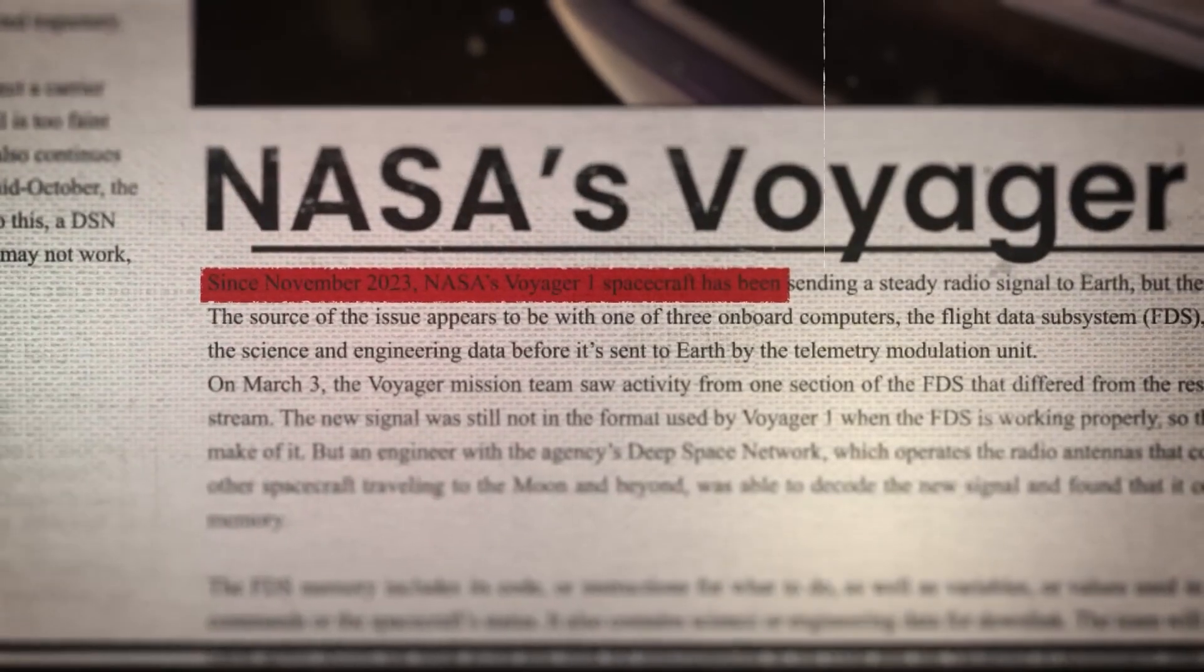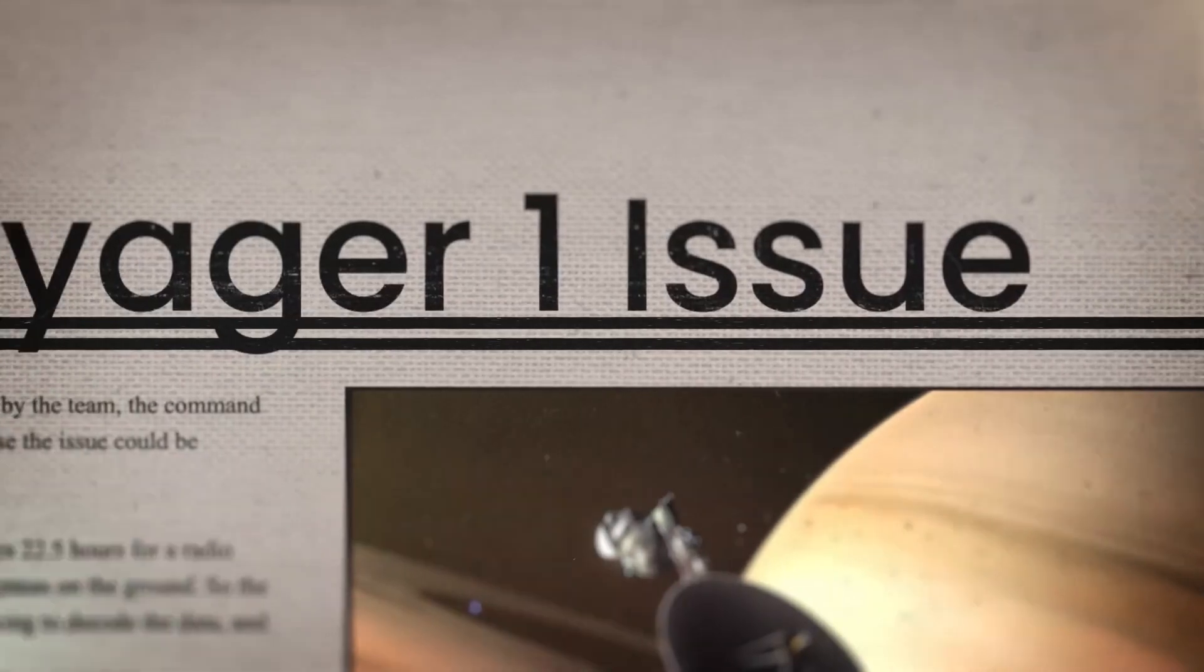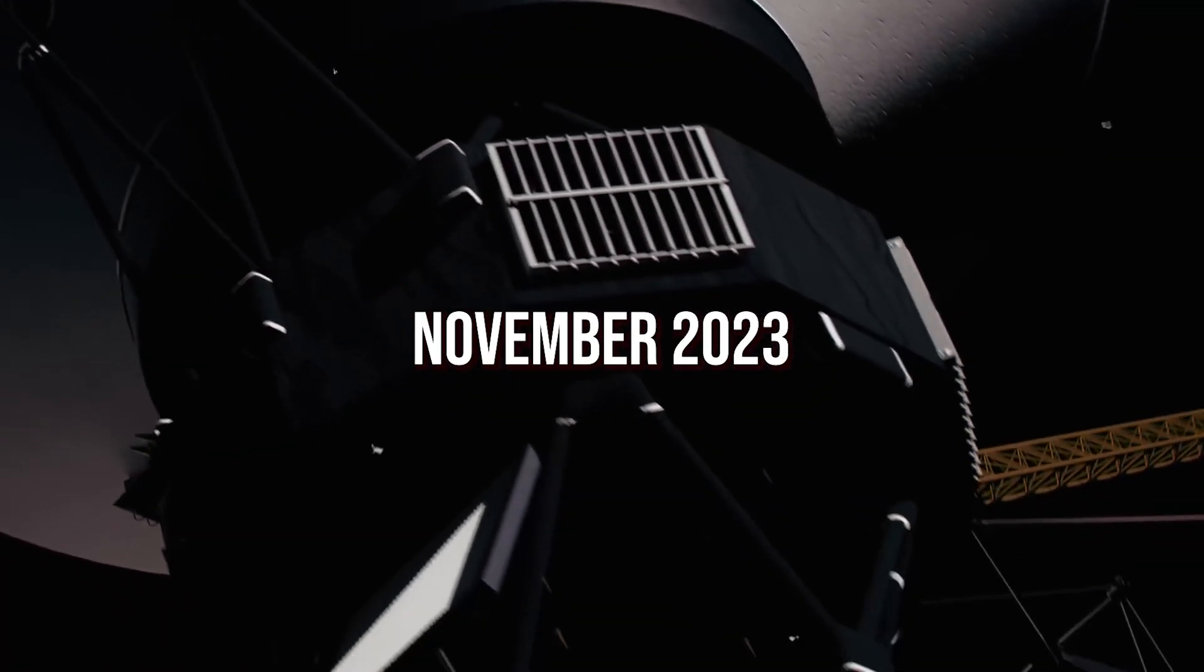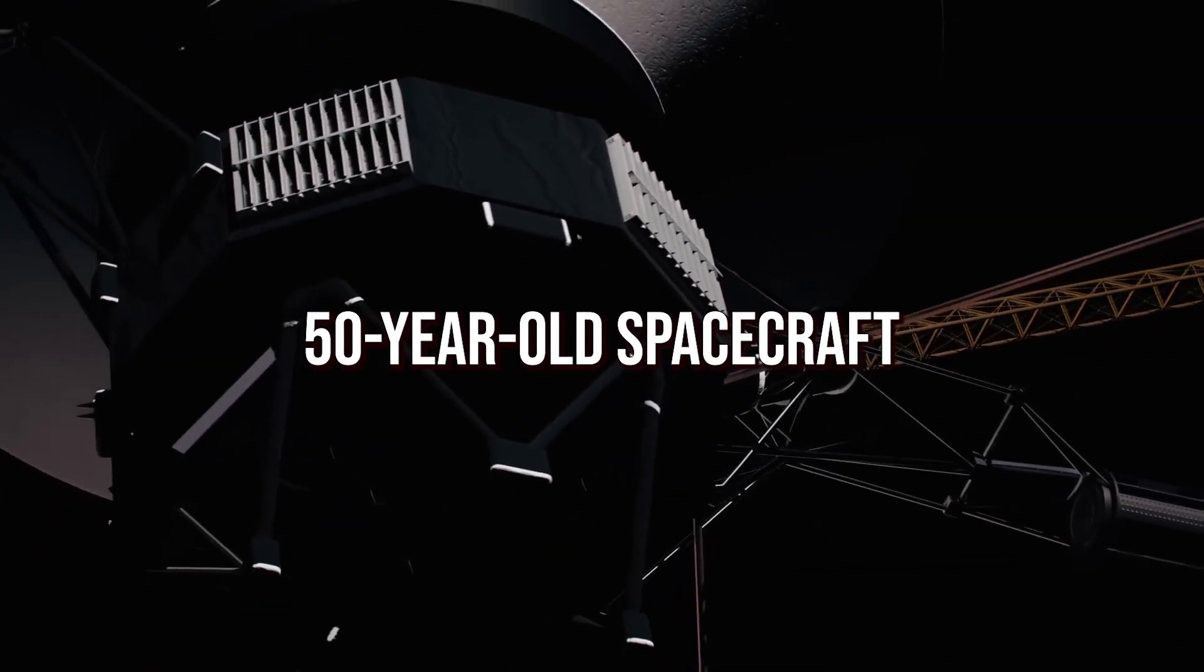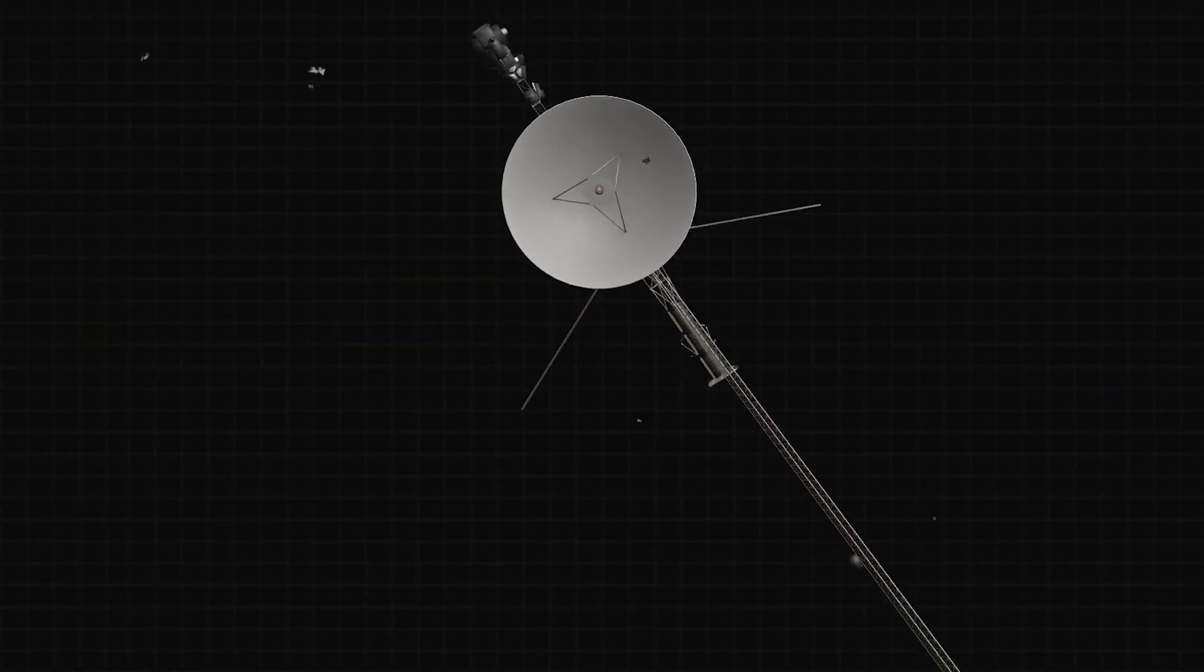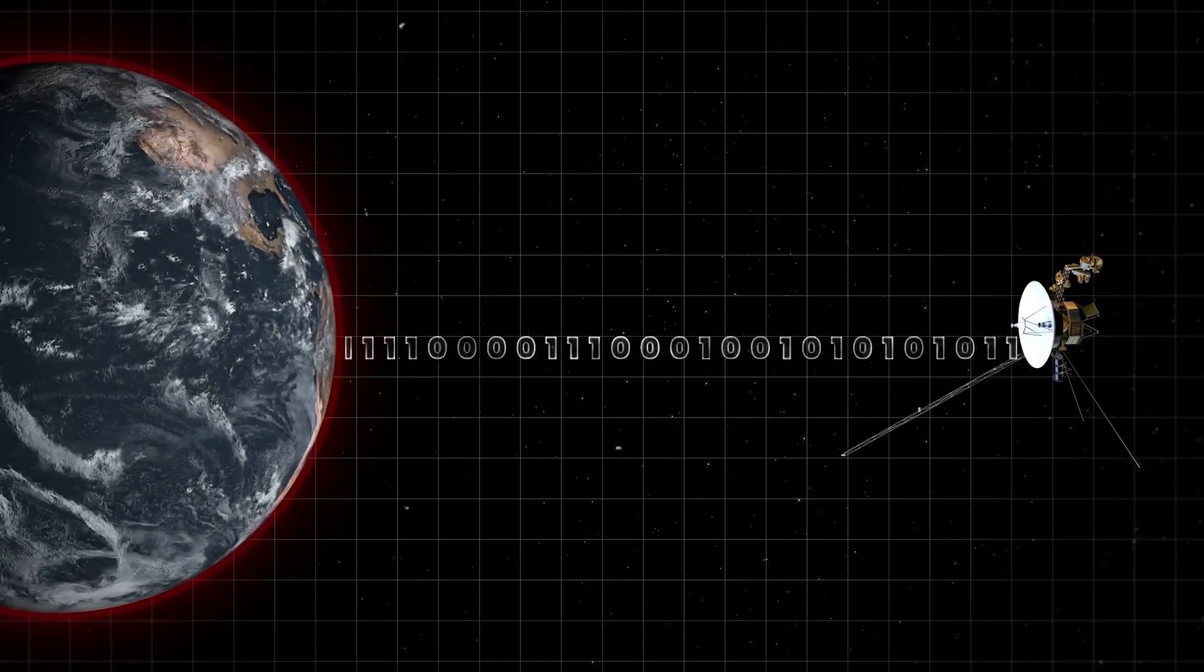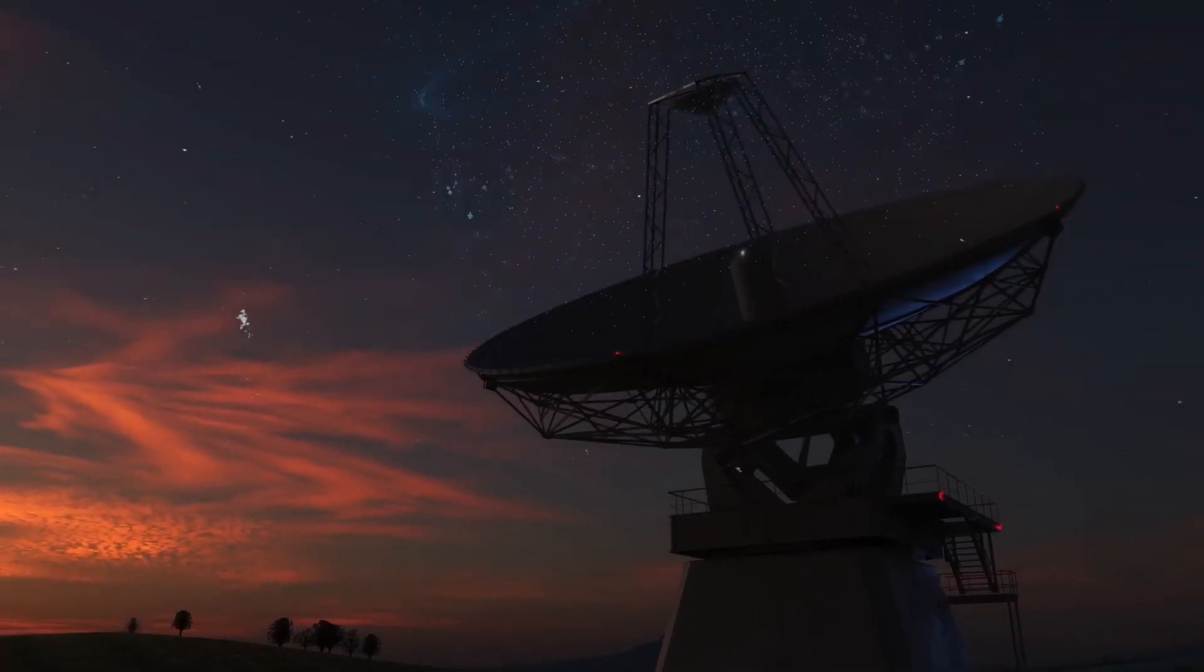After an intense five months, NASA has finally received a clear signal from its Voyager 1 spacecraft. Since November 2023, the nearly 50-year-old spacecraft has faced challenges with its onboard computers. Despite transmitting a steady radio signal to Earth, the data received has been unusable, leaving scientists puzzled.